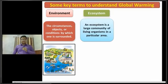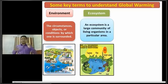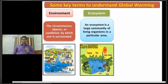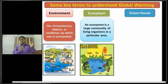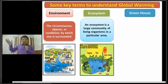This is the definition of ecosystem. Dear students, now I am going to show you a picture of an ecosystem. Dear students, now I am going to discuss about the next term, that is greenhouse. Basically, a greenhouse is a type of house made of transparent glass to grow crops in cold countries.